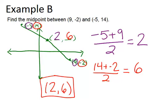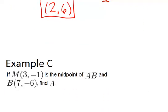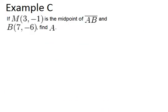Alright, let's go on to our last example. Example C: If M(3, -1) is the midpoint of AB, and B is (7, -6), find A.